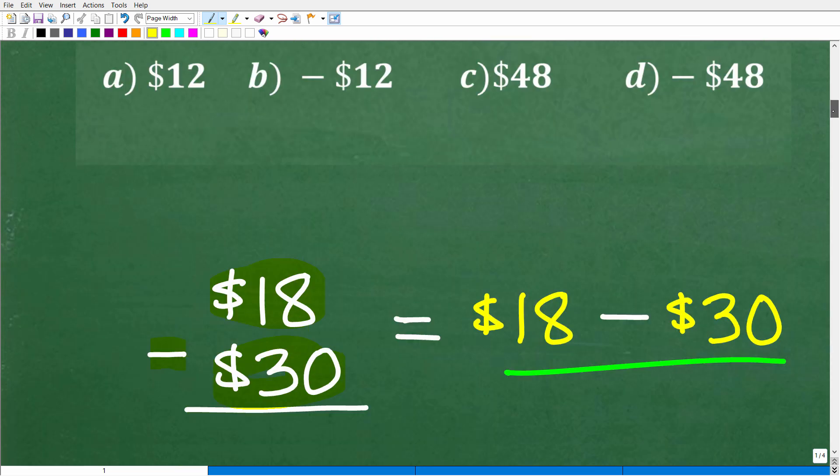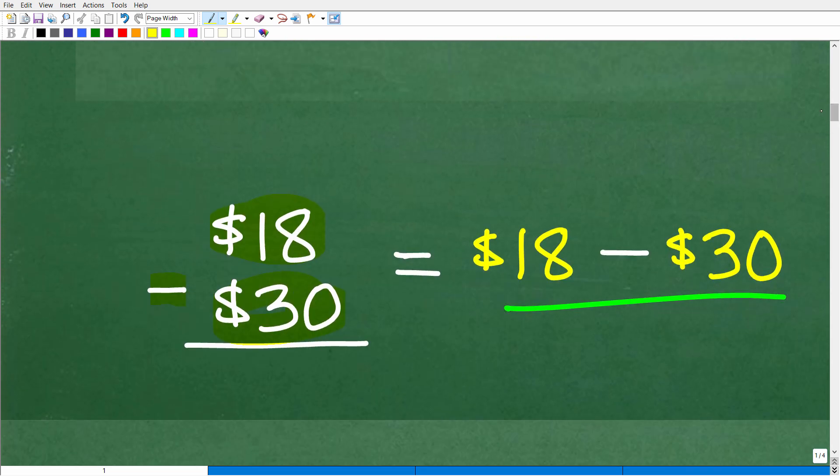All right, so what does that mean? Well, it means that instead of thinking of our problem this way, $18 minus a $30, really what we want to do is think of this as $18 minus a negative $30. So instead of the problem being $18 minus $30, really what it is, it's $18 minus a negative $30.